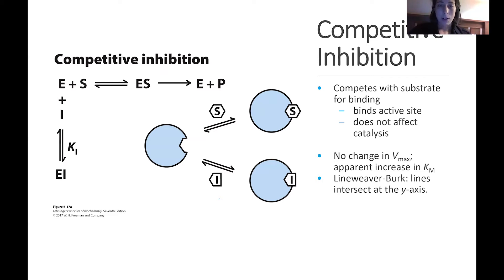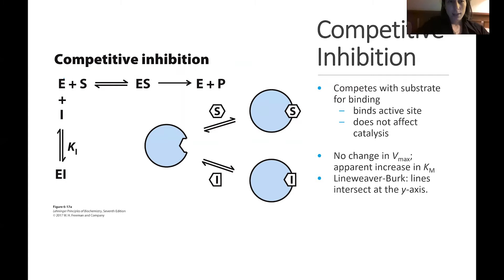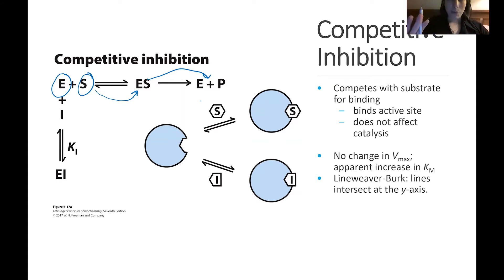Competitive inhibition is any type of inhibitor that is competing for the same site that the normal substrate binds to — it binds the normal active site. For competitive inhibition, you have your enzyme that could bind your substrate and, just like normal, it could form this complex which then makes product. But if the enzyme instead reacts with an inhibitor before it ever binds its substrate, you'll form the enzyme-inhibitor complex.